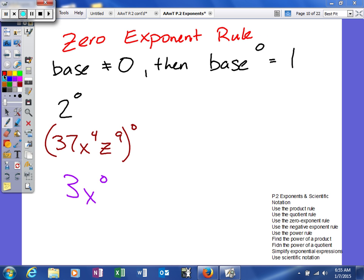A couple examples we'll look at. Two to the zero power, as you can see, the base is not one, but we do have an exponent of zero. Any time you have an exponent of zero, it'll be simplified down to one.